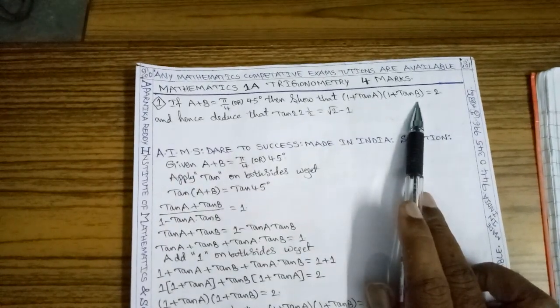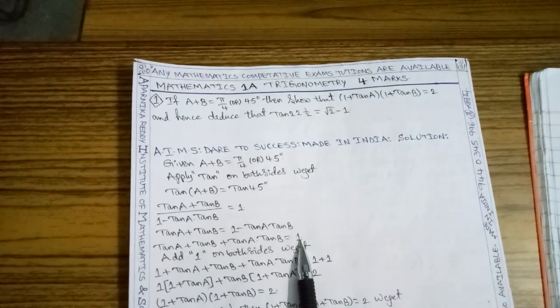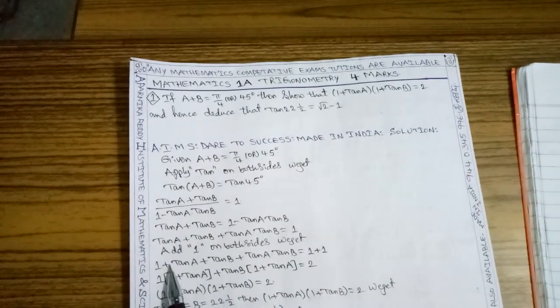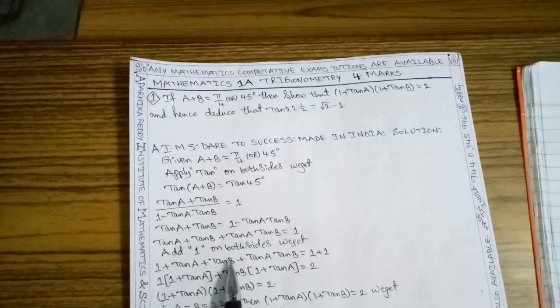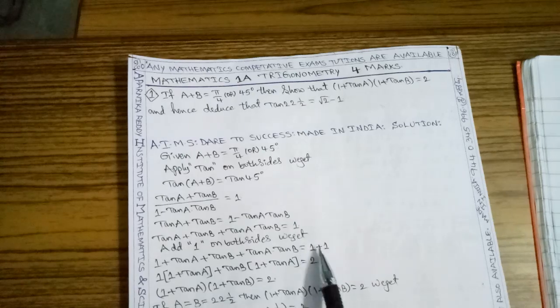According to the given question, the right hand side should be 2. But in this answer, the right hand side is 1. So add 1 to both sides. We get 1 plus tan A plus tan A tan B plus tan B equals 2.